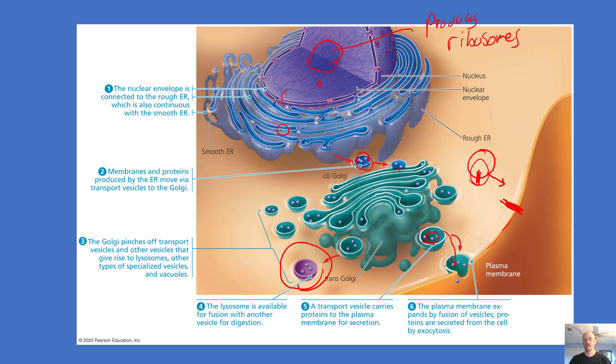Also, the contents of one of these vesicles can be ejected to the outside world and used as a signal to signal other cells. There's a lot going on here. It's a pretty impressive process. So have a look at this diagram, read it over, and see how these things are all interconnected.